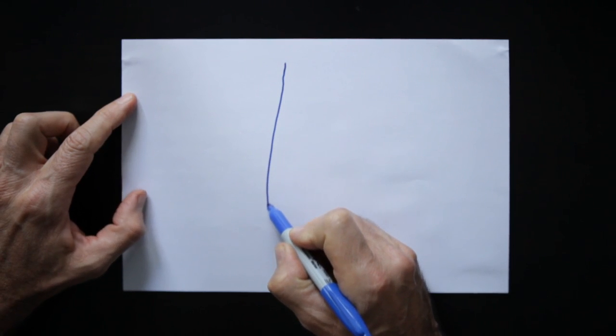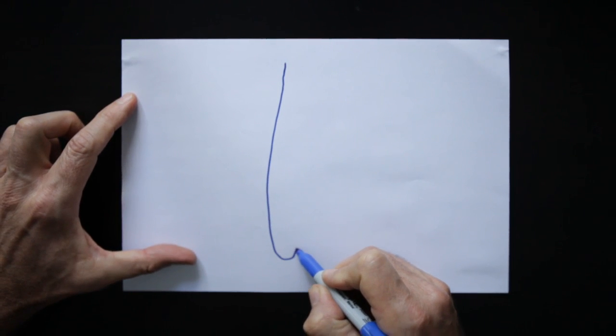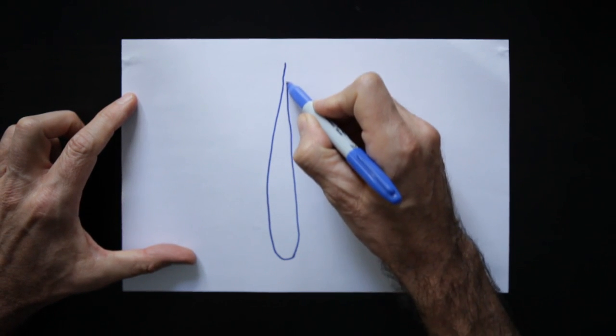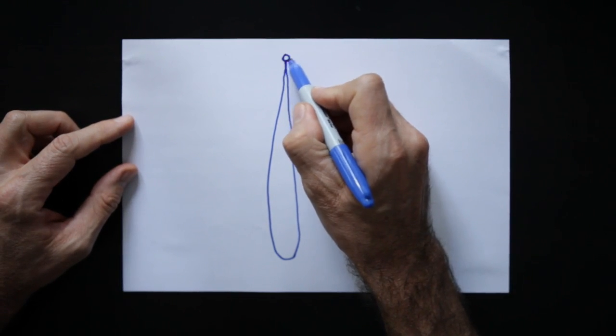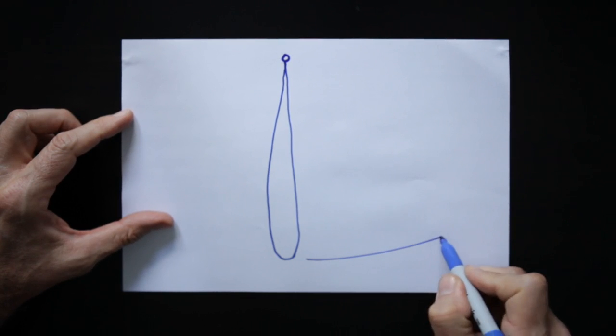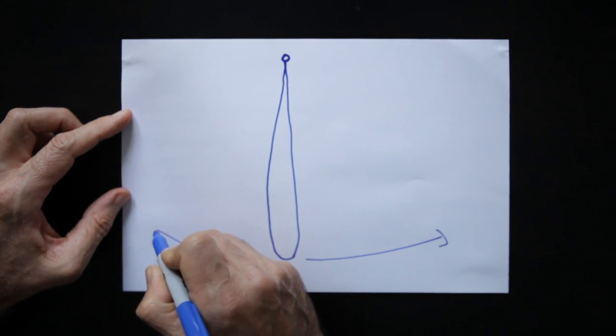So this is just like the pendulum you see in a grandfather clock or any kind of clock you can imagine. The pendulum hangs from the point at the top and swings from one side to the other.